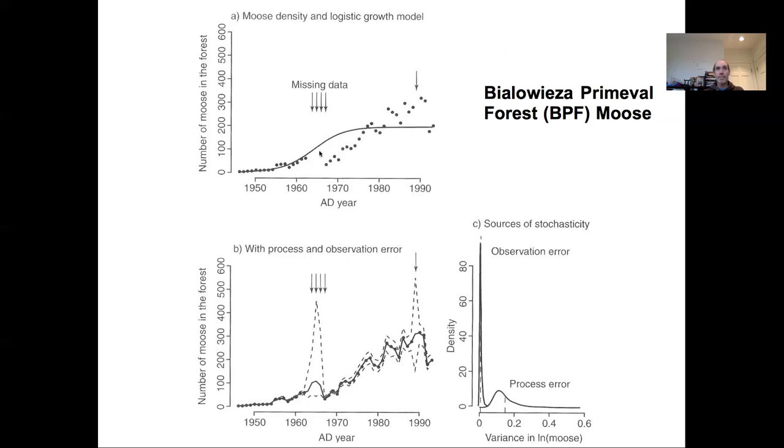We have a large gap in the 1960s and a single year gap in the late 80s. In the bottom right panel, we see this partitioning between the observation and process error. Particularly, the conclusion that most of the variability we see in this time series is likely to be variability in the process itself, not variability in our observation. It's saying that the variability we see here is real, not just a reflection of observation error in our ability to count moose.